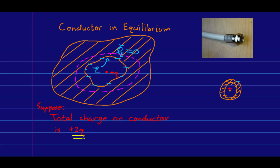The conductor itself has a total charge of plus 2Q. We know it has negative Q on the inside surface and no charge inside the material, so all the rest of the charge on the conductor is on the outside surface. Since the total charge on the conductor is plus 2Q and it has negative Q on the inside surface, it must have plus 3Q on the outer surface.